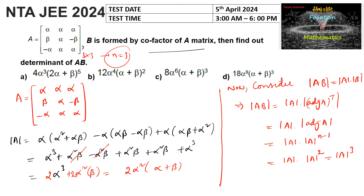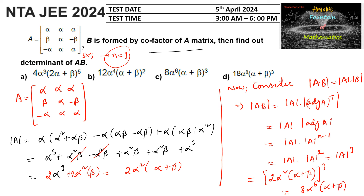So determinant of AB equals det(A) cubed, which equals (2·alpha squared times (alpha plus beta)) whole cubed. That gives 8·alpha to the power 6 times (alpha plus beta) to the power 3. So we can go with option C.